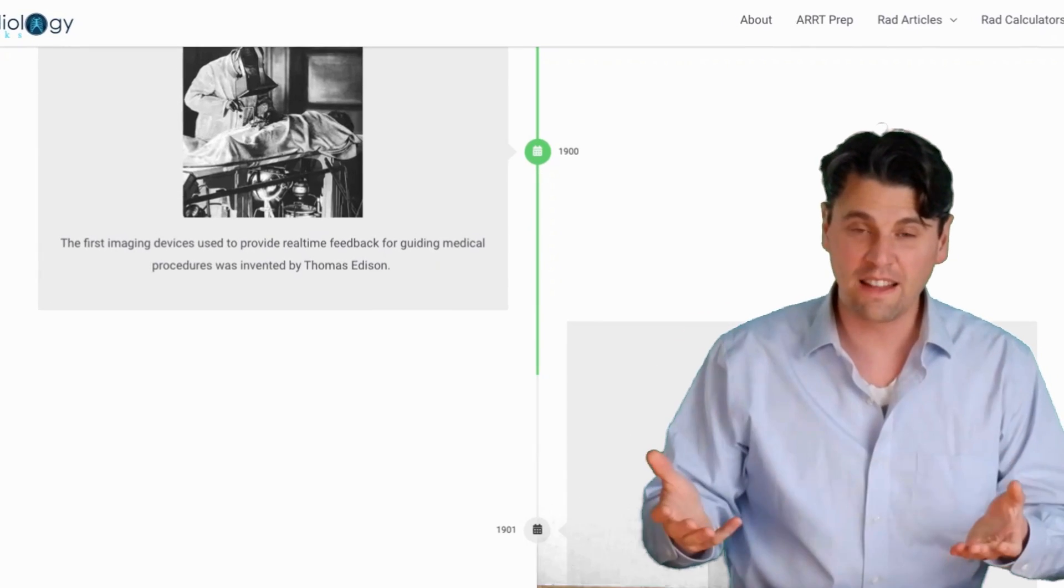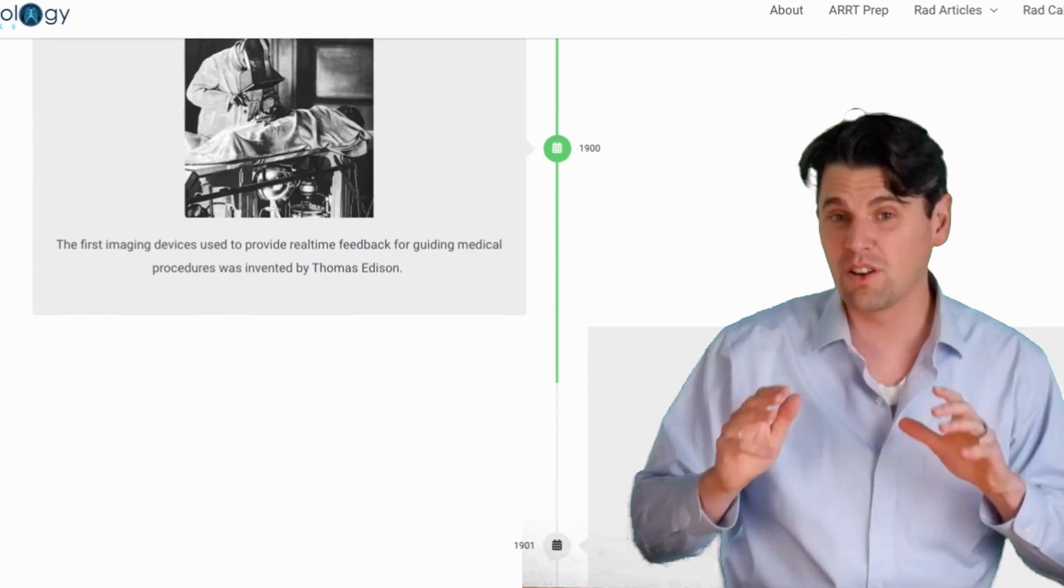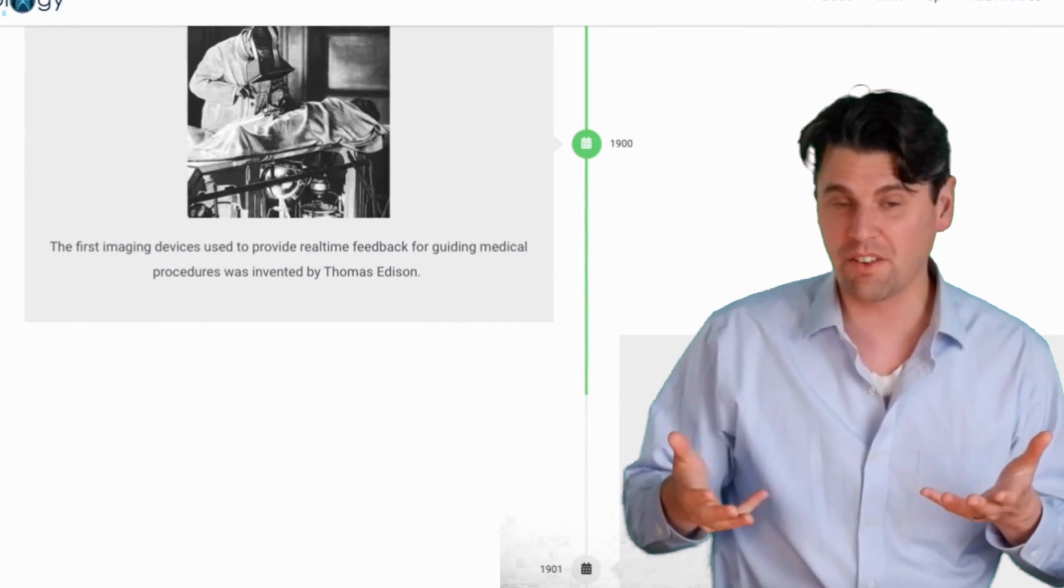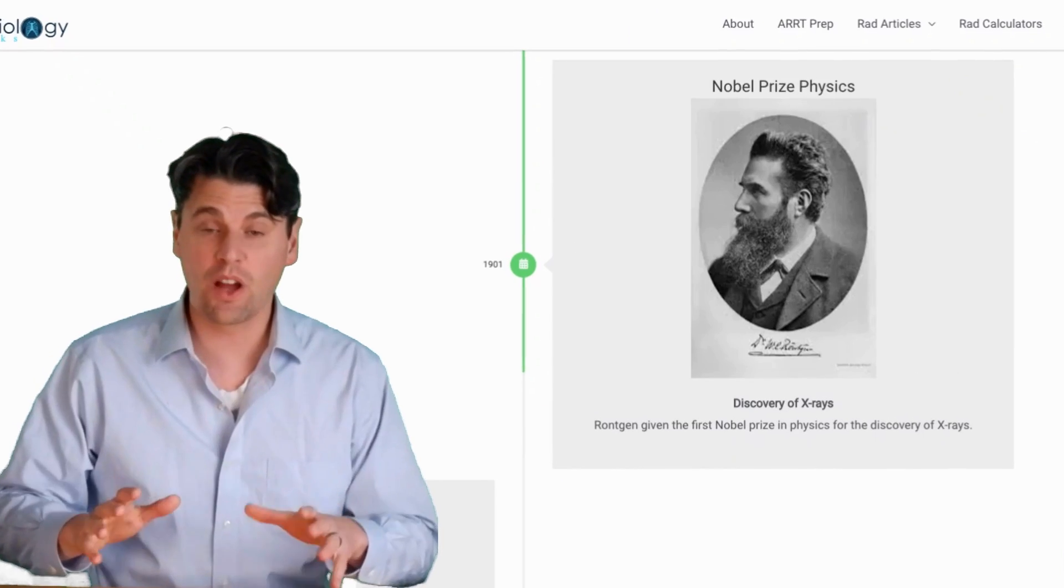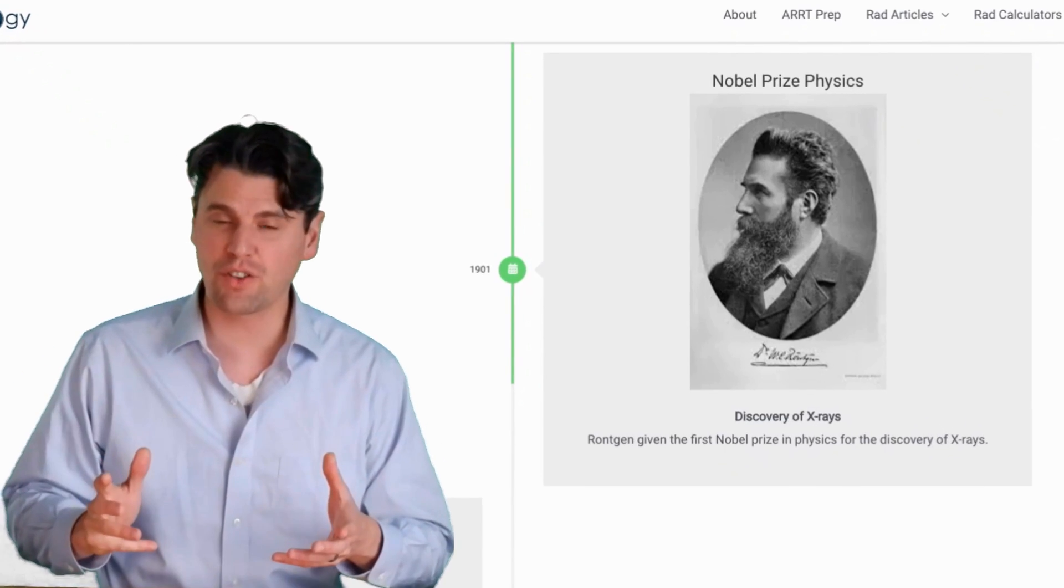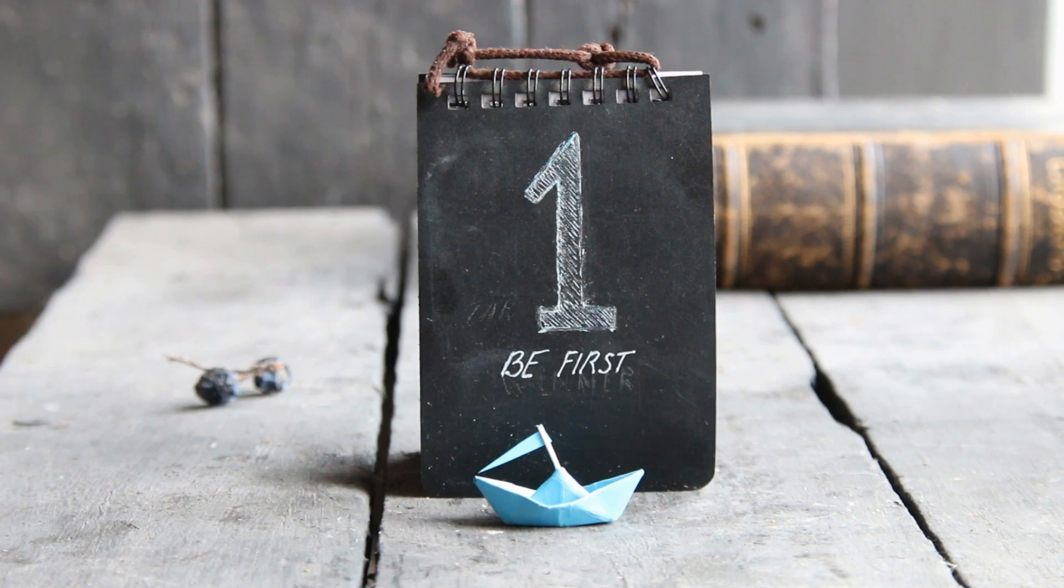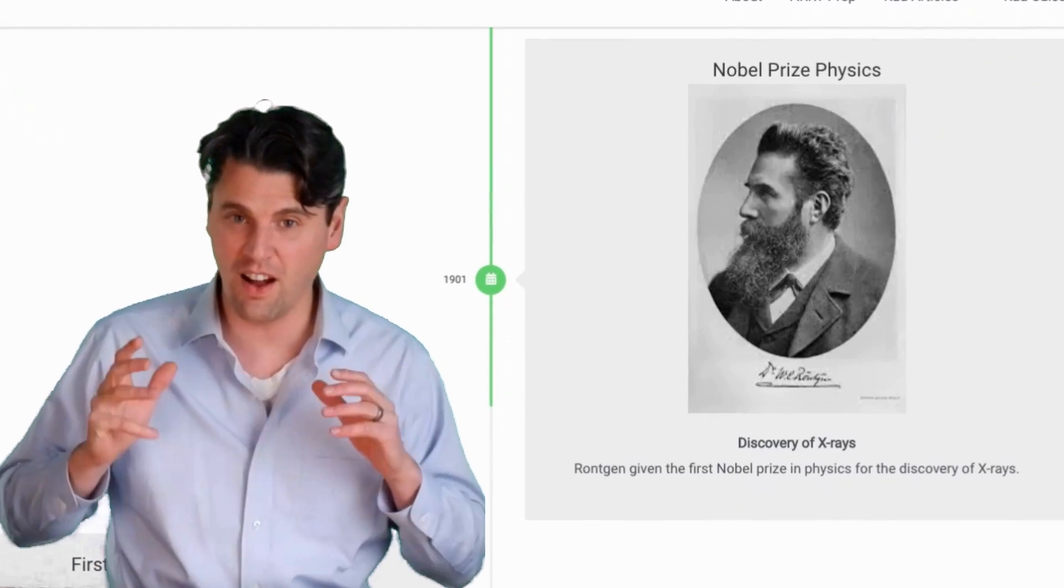In 1900, the idea of using X-rays to provide real-time guidance for a surgical procedure was invented by Edison, and this is actually called fluoroscopy. In 1901, Röntgen got the first Nobel Prize in physics for the discovery of X-rays.